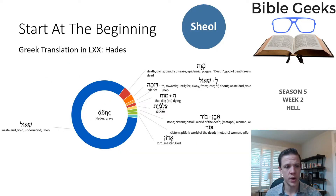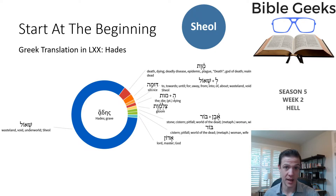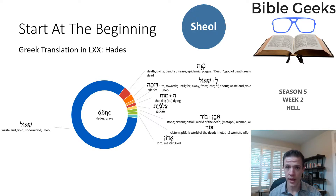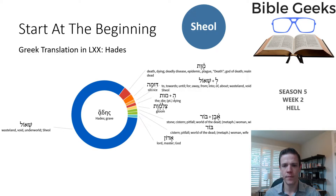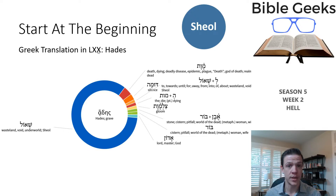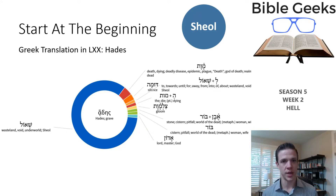Now in the Greek, we see Sheol translated as Hades. You've probably heard of Hades before — if you've taken any Western civilization class and looked at classical mythology. Hades was the realm of the dead as well as the lord of the underworld, so it had this dual meaning of sometimes referring to a place and sometimes to a person, and the person and the place were conflated together. Any time in the Old Testament you see the word Sheol, you will see in the Greek translation — the Septuagint — Hades. If you see 'LXX,' that's the Roman numeral 70, referring to the Greek translation of the Old Testament.